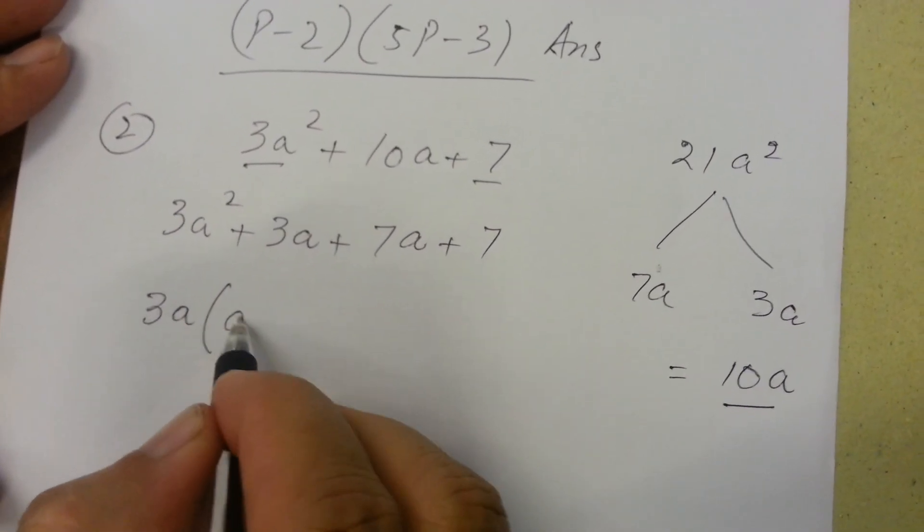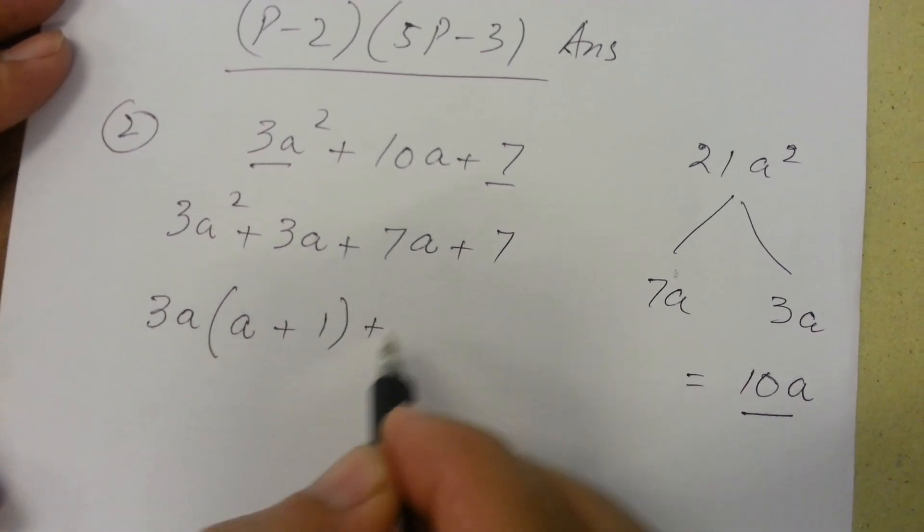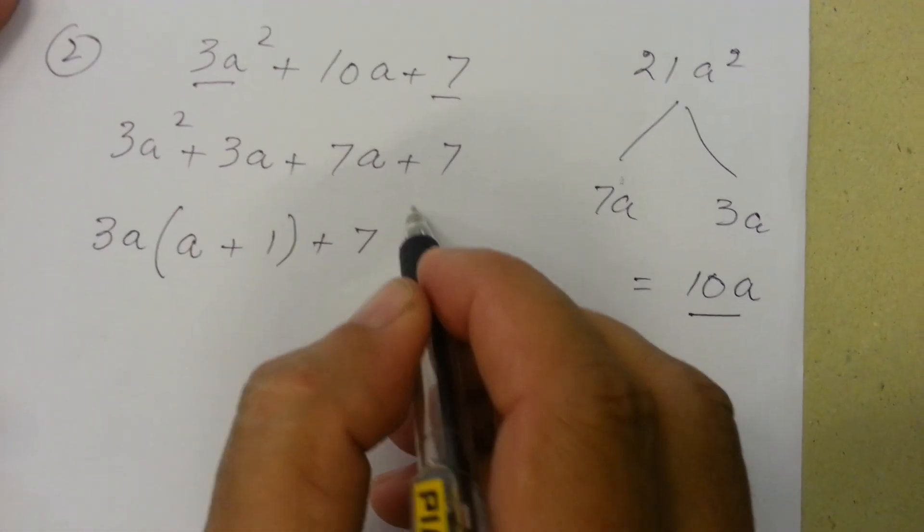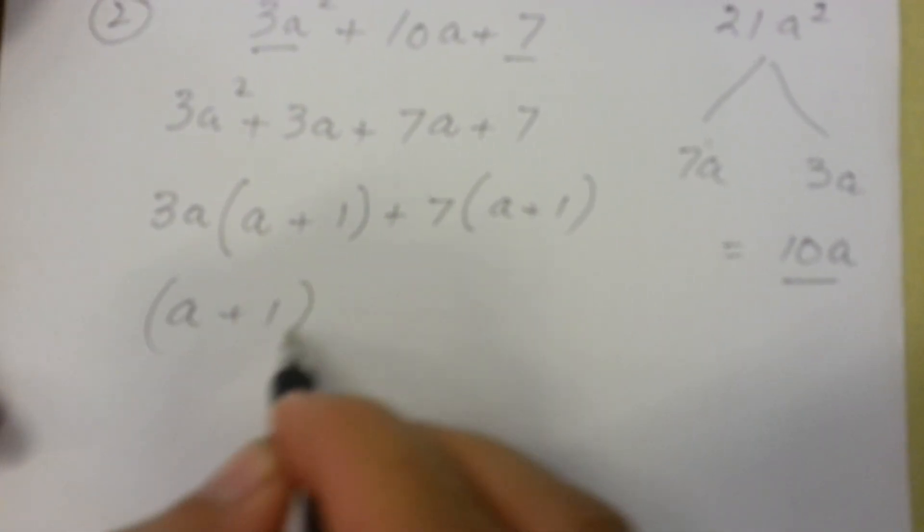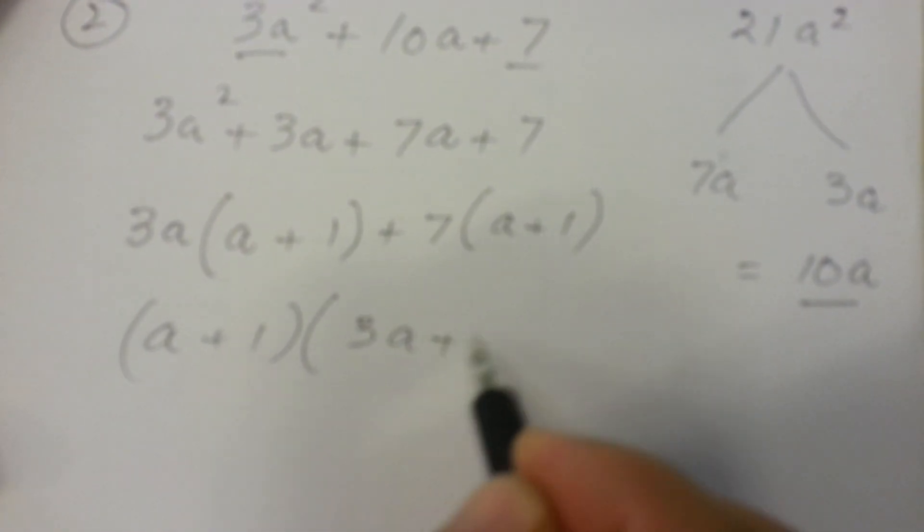...there will be a + 1. Again taking 7 as common, a + 1. So (a + 1) is again common into (3a + 7).